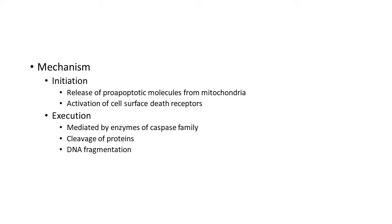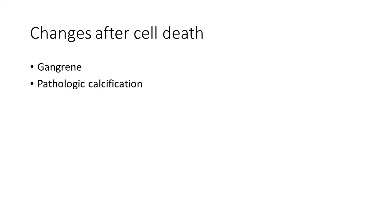The cell is transformed into apoptotic bodies, which are removed by macrophages as seen in the morphology features. Now we will move on to the next section — changes after cell death. The cell has died; we will be discussing two changes: gangrene and pathologic calcification.